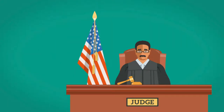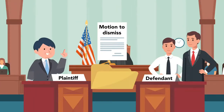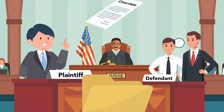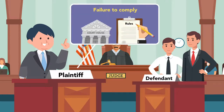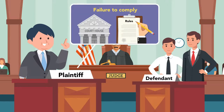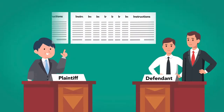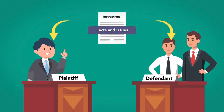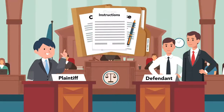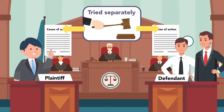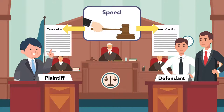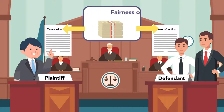The court can also dismiss the case on the defendant's motion to dismiss if the plaintiff or another party in a cross-claim or counterclaim has failed to comply with the rules or a court order. When there are multiple cases filed between the same or similar parties, facts, and issues, a court may consolidate them into one case, or it may order that some causes of action or parties be tried separately. This is all decided by factoring in efficiency, speed, cost, and fairness concerns.